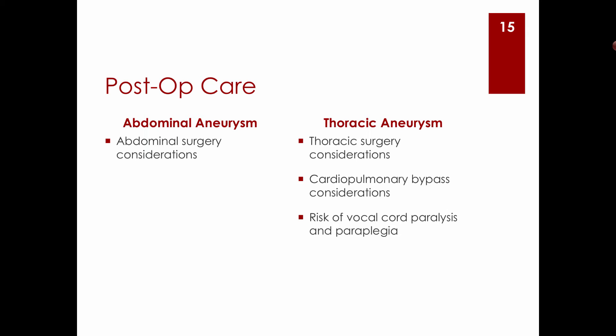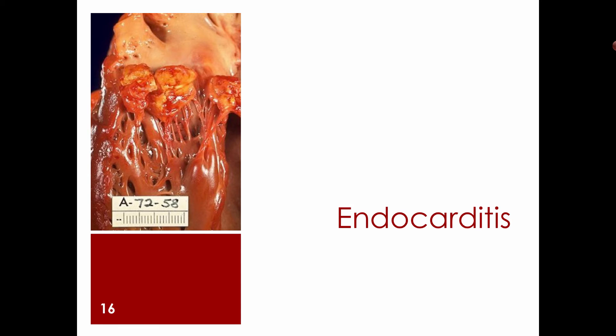With thoracic aneurysm repair there is also risk of vocal cord paralysis and paraplegia, because the spinal arteries that come off the aorta can be affected during cross-clamping. The surgeon needs a bloodless field, so they cross-clamp the aorta — during that time there's no blood to the spine. There is a very short window to complete that part of the operation, roughly 14 minutes.